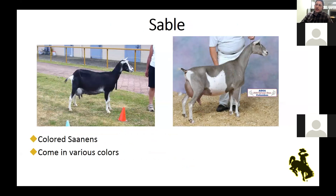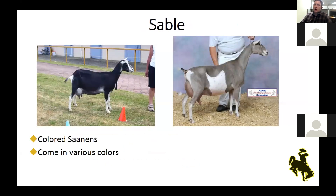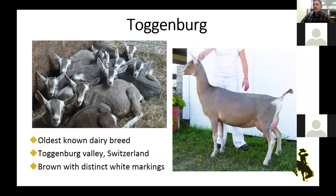The Sable is also from Alpine ancestry but is essentially just a colored Saanen. Saanens that carry a recessive color gene are essentially Sables — they now have their own breed registry, but are very much the same animal. They come in a lot of color and pattern variations, similar to the Alpine. The Toggenberg is the other color pattern not acceptable in Alpines because it's specific to this breed, originating from the Toggenberg Valley in Switzerland. It's known as one of the oldest dairy breeds, with a distinct cream or brown color and white markings down the sides of the face from above the eyes down.